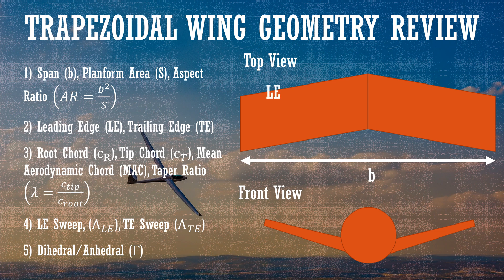The leading edge of the wing is the forward part that is introduced into the airstream first. The trailing edge is the edge of the wing that trails the airfoil in terms of the airflow. The chord is the distance from the leading edge to the trailing edge — you draw a straight line between them and that's your chord.